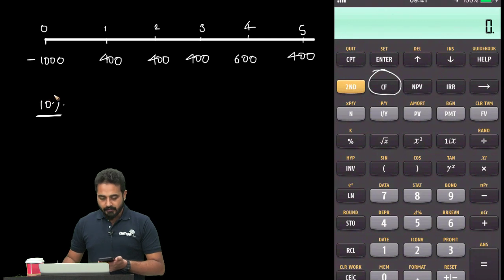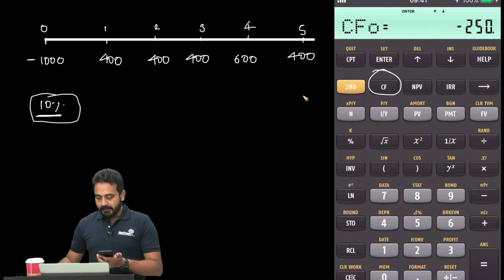I'm going to press the cash flow button on the calculator. We are going to calculate NPV with a discount rate of 10%. To delete something from my previous calculation, I'm going to press Second and Clear Work.